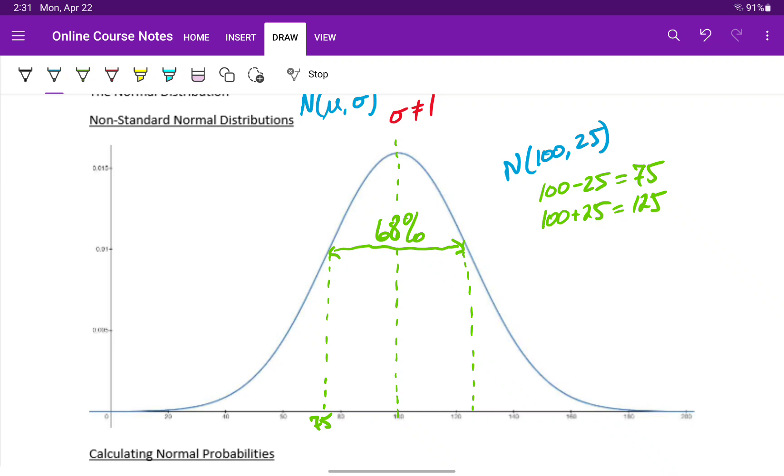We can also take any data point in this distribution and convert it to what's referred to as a z-score.